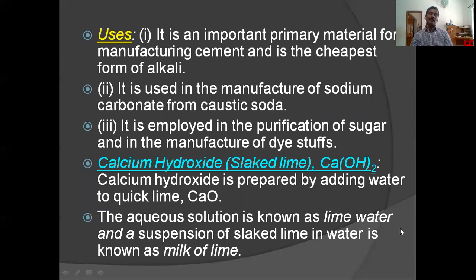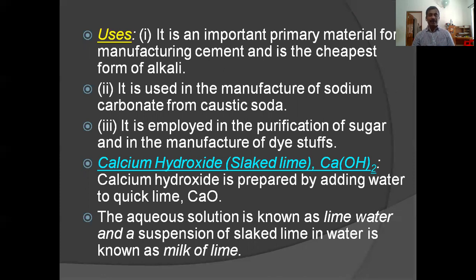Uses of calcium oxide: it is an important primary material for manufacturing cement and is the cheapest form of alkali. It is used in the manufacture of sodium carbonate from caustic soda (sodium hydroxide) using calcium oxide and carbon dioxide. It is also employed in the purification of sugar and in the manufacture of dye-stuffs.